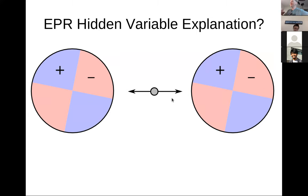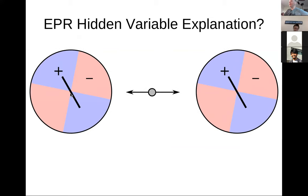EPR suggested that each photon comes with a hidden variable — pictured like a little pie oriented at some random angle — and the entangled photon source creates these in pairs with matching orientations. If the detector is oriented in the blue region the photon goes through; in the red region it reflects. This explains the limiting cases: same orientation gives perfect correlation, 90-degree offset gives perfect anti-correlation, and 45-degree offset gives completely uncorrelated results.